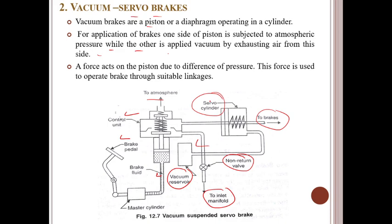Vacuum brakes are now very commonly used and are very suitable for modern vehicles. This is another form of servo brake system where suction from the engine inlet manifold is utilized for brake applications. There are two types of vacuum servo brakes, both incorporating a piston or diaphragm operating cylinder with suitable linkage. A small vacuum reservoir is also provided to give enough vacuum for several brake applications even after the engine has stopped.